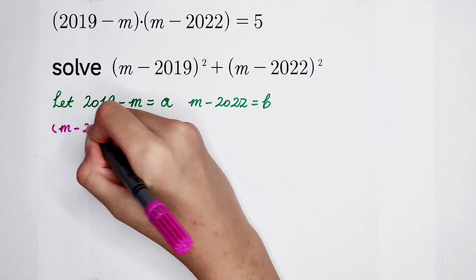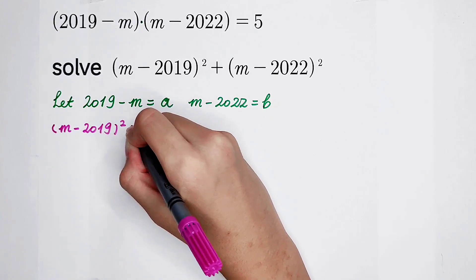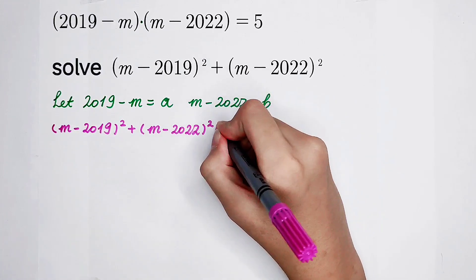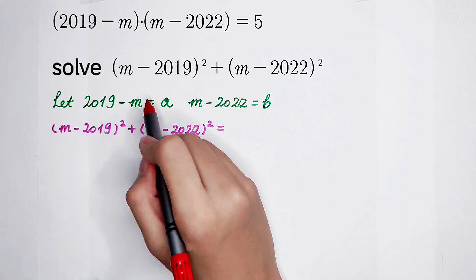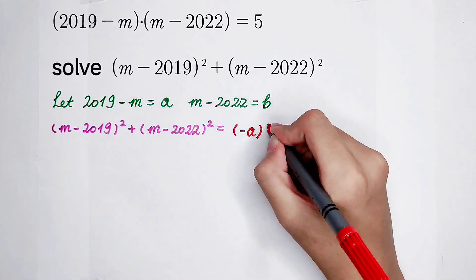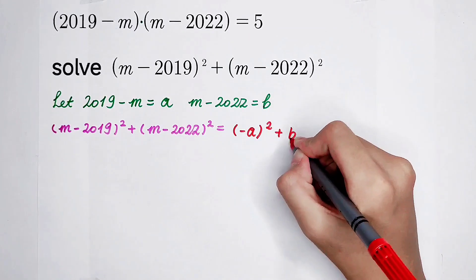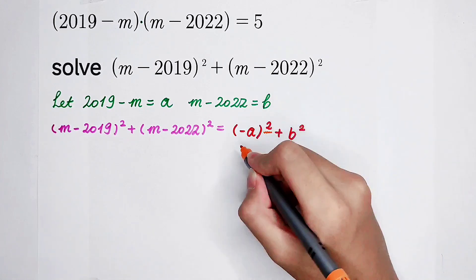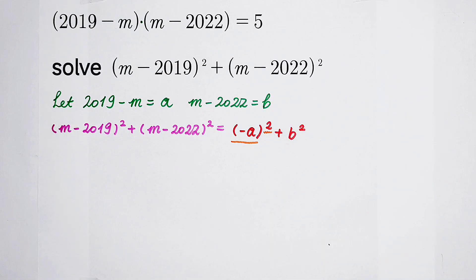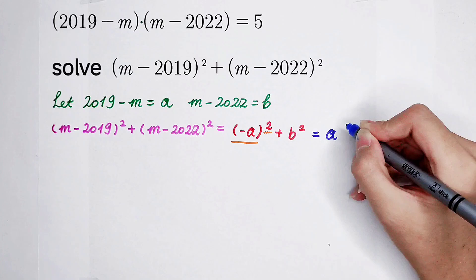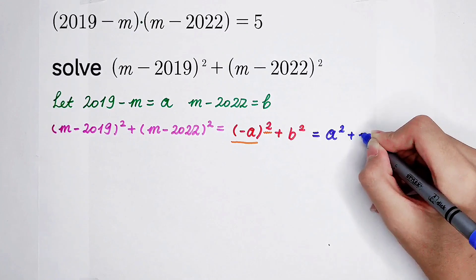So I write: (m minus 2019) all squared plus (m minus 2022) all squared. Because 2019 minus m is a, then m minus 2019 is negative a. And m minus 2022 is b. So this becomes (negative a) squared plus b squared. Since (negative a) squared equals a squared, the expression simplifies to just a squared plus b squared.